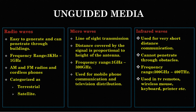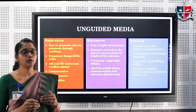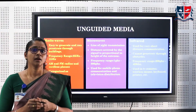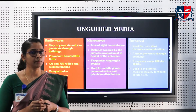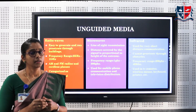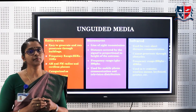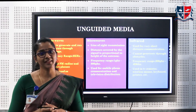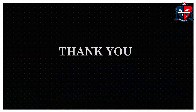As a summary, transmission media is one which helps in the transmission of data from the sender to the receiver, and it is of two types: guided and unguided media. Guided media examples include twisted pair cable, coaxial cable, and optical fibers. For unguided media, we have learned three examples: microwave, infrared wave, and radio waves. That's all for the day. Thank you all for watching.